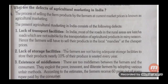Second defect: Lack of storage facilities. Farmers do not have adequate storage or warehousing facilities to store their products. As a result, nearly 10% of their produce is wasted every year.